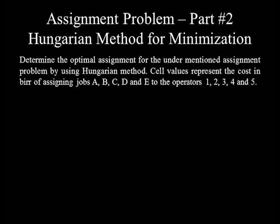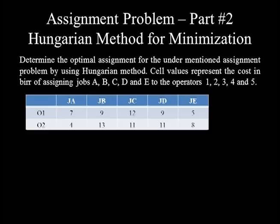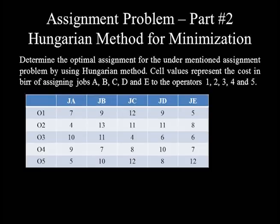In this Part 2 of the assignment problem, we will discuss the application of the Hungarian method for solving a balanced assignment problem for minimization. Let's start by this problem: determine the optimal assignment for the under-mentioned problem by using the Hungarian method.